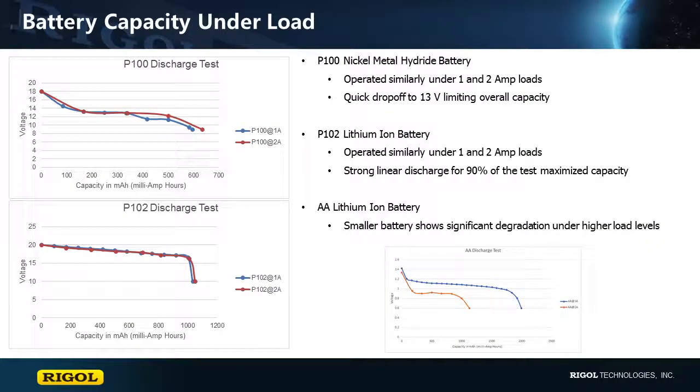After completing all of our tests on different batteries and compiling the results, we can see that the 18V batteries, P100 and P102, are both likely designed to operate between 1A and 2A of constant current load. As the tests show similar operating conditions under both of these tests.